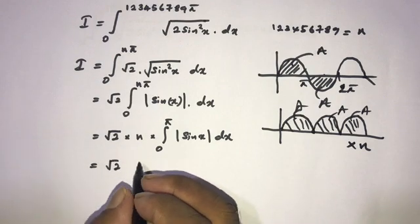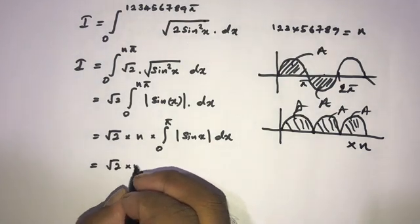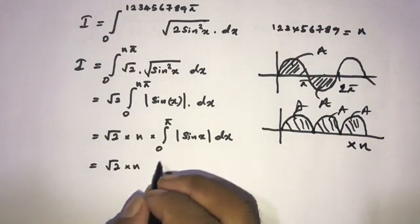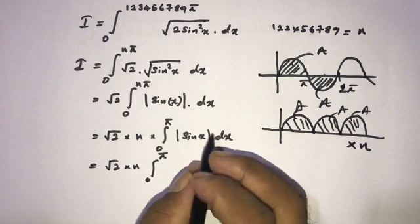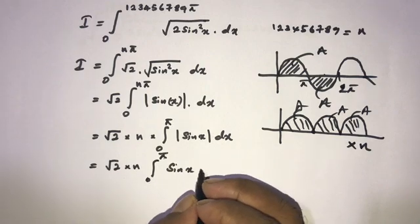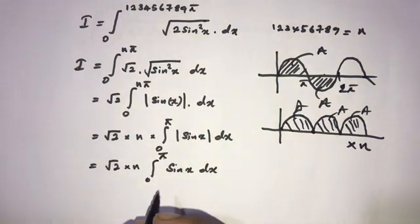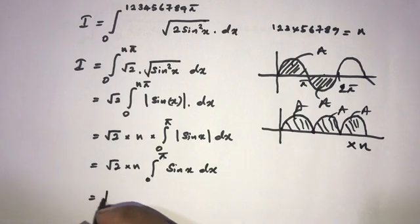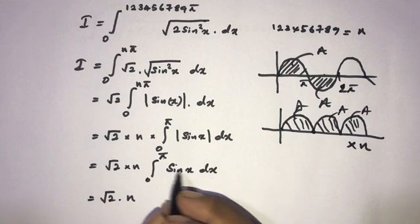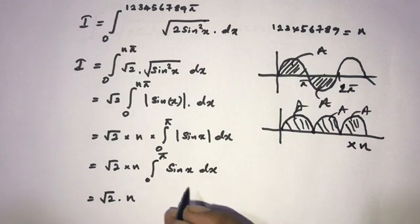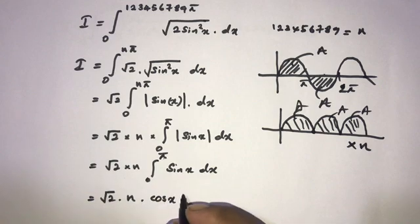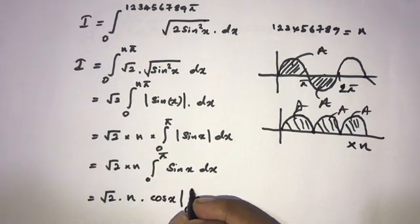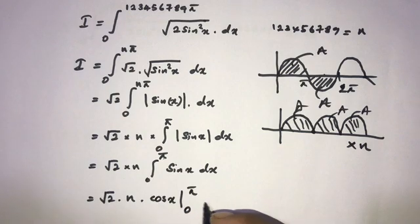So we have square root of 2 times n, and from 0 to 5 we know the absolute value of sine of x equals sine of x dx. So square root of 2 times n times the integral of sine of x, which equals negative cosine of x, evaluated with the limit from 0 to 5.